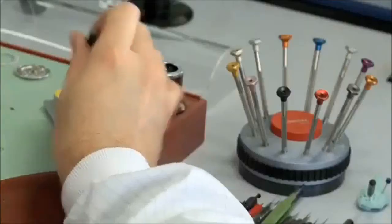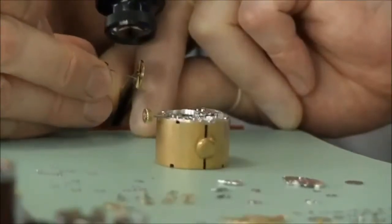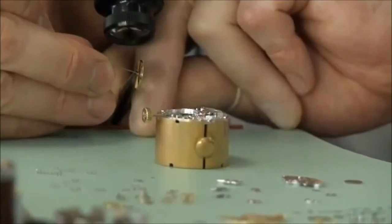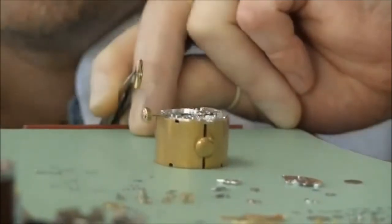During reassembly of a mechanical movement, there are typically 50 to 100 oiling points. These must all be completed correctly, or the watch may be damaged, or stop.